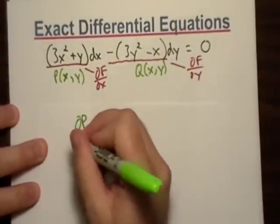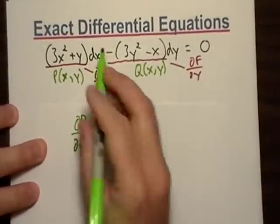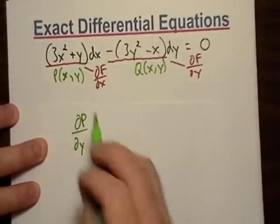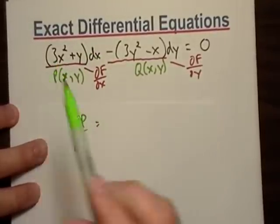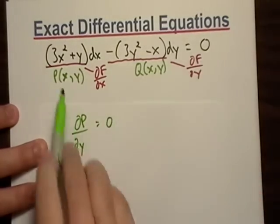So, what's partial P with respect to y, not x? Remember, it's just the opposite of what's up here. So, what is that? Well, partial with respect to y, that just goes to zero, the three x squared. And, then the y, that's equal to one.